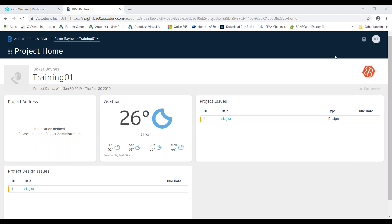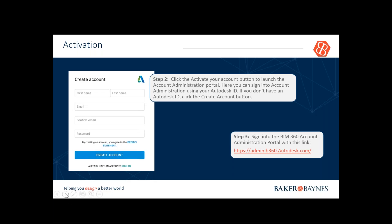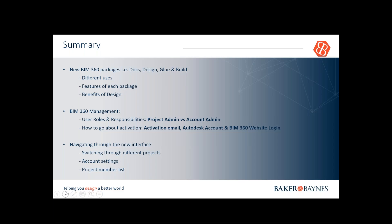Quick summary and conclusion: we went through the basic BIM 360 packages — Docs for document management, Design for work collaboration, Glue for coordination, and Build for management of on-site processes and project management. We went through the different uses of each package and the benefits of Design. We also discussed the different roles and responsibilities and how to activate and log on to the website. We then navigated the new interface, how to switch through projects, and basic navigation throughout the account.